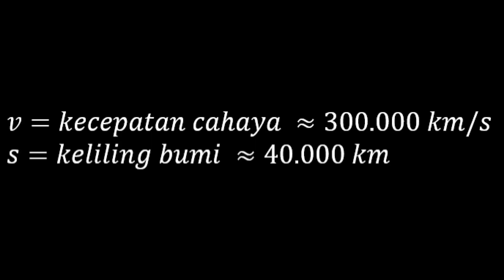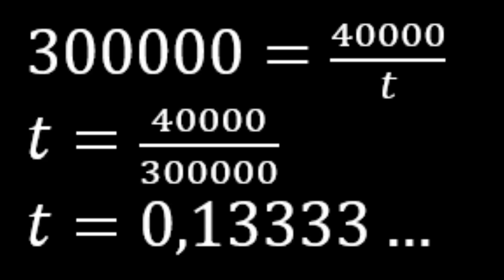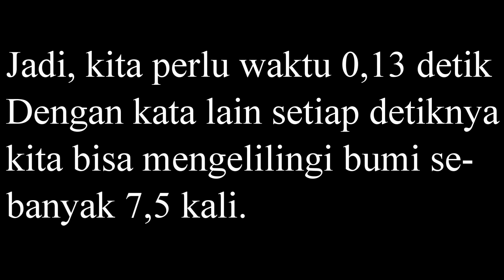T melambangkan waktu. Di sini kita tahu V-nya, kecepatannya itu kecepatan cahaya, sekitar 300.000 km per detik. Untuk S-nya atau jaraknya, yaitu keliling bumi, sekitar 40.000 km. Sekarang mencari T-nya. 300.000 sama dengan 40.000 per T. T sama dengan 40.000 dibagi 300.000. T sama dengan 0,13333 dan seterusnya. Jadi sangat cepat waktunya, yaitu sekitar 0,13 detik.